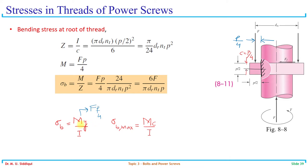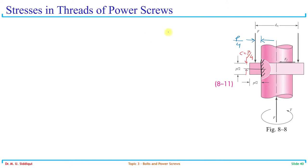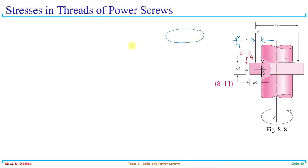Now we have a circular shape — the thread is actually a helix, and although its profile is square, it is still a helix. So we need to make certain assumptions. Our first assumption is that our thread is not a helix but just a simple circle. We say the thread looks like a donut with height p/2 and width p/2.